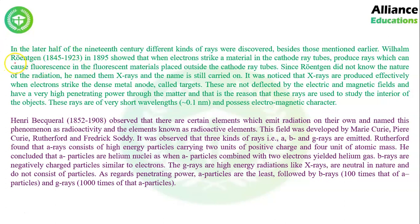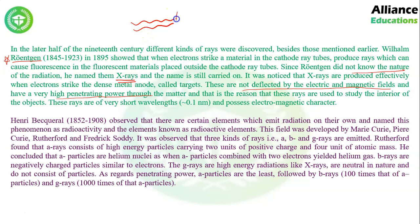Do you know who invented X-rays? It was Röntgen. Röntgen discovered X-rays by striking cathode rays against a metal. He observed that when cathode rays hit the metal, a different type of radiation is produced. Since its nature was unknown, he named it X-ray. He found that X-rays are not deflected by electric or magnetic fields, and their penetration power is very high.